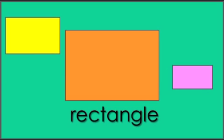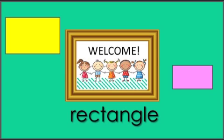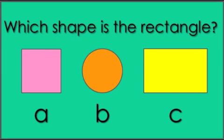This shape is a rectangle. A rectangle comes in different colors and sizes, too. Look around to find things shaped like a rectangle, like a picture frame. What do you think?